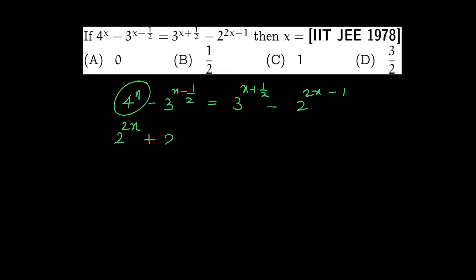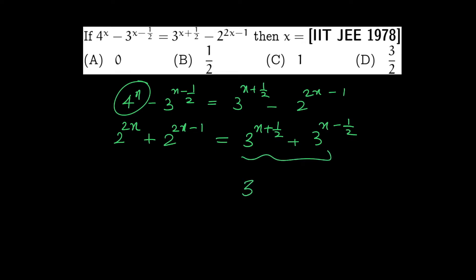2 raise to 2x minus 2 raise to 2x minus 1 is equal to 3 raise to x plus half plus 3 raise to x minus half.